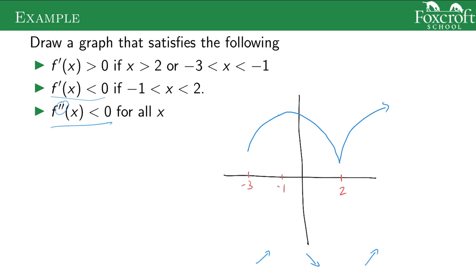There's really no way to switch from that decreasing to increasing part with that concavity without making a sharp corner. But this fits the narrative: it's increasing where we want, decreasing where we want, and concave down everywhere. Again, this is only one option — you could have a sharper one, a more gradual one, then a sharp one — as long as each piece fits the given conditions, it works.